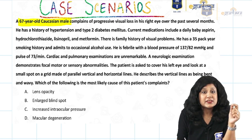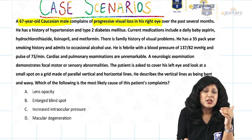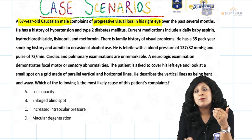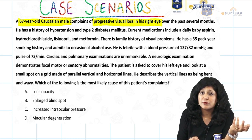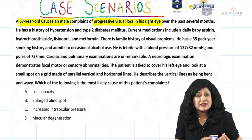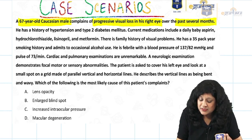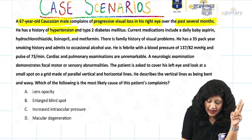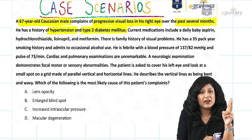We have a 67-year-old Caucasian male who is complaining of progressive visual loss in the right eye. The kind of vision loss is the most important clue in making the diagnosis. We have differentials of sudden painful, sudden painless, and gradual painless progressive diminution of vision. This patient is having progressive visual loss over the past several months, so it is a gradual condition. He has a history of hypertension and type 2 diabetes.